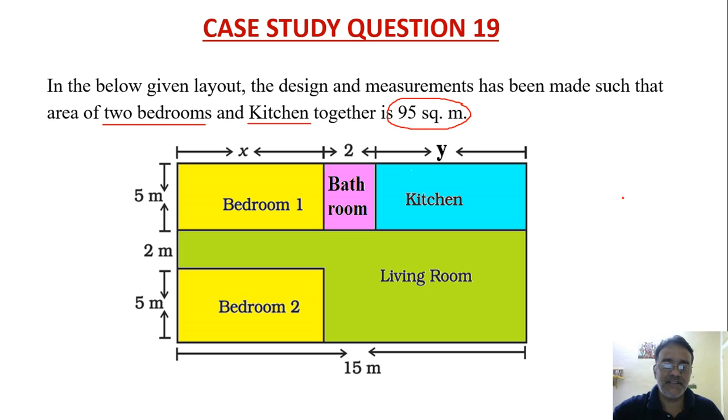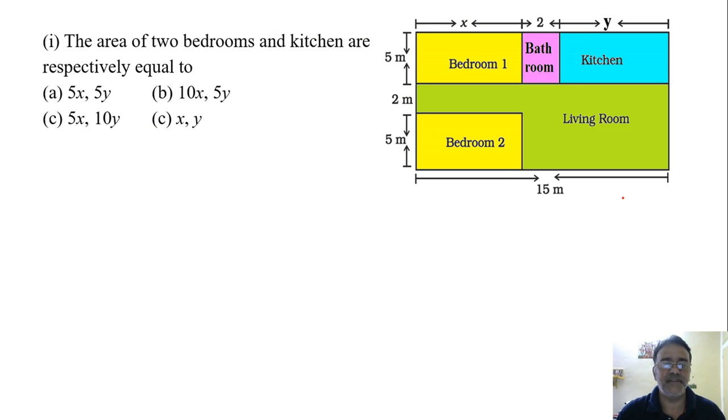So based on this layout some questions are there. We are going to solve those questions. This is the first question. The area of two bedrooms and kitchen are respectively equal to, with respect to this one. So this is the bedroom. What is the area of this bedroom number 1? 5x, very good.